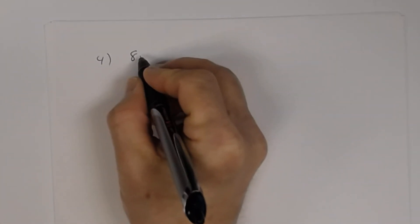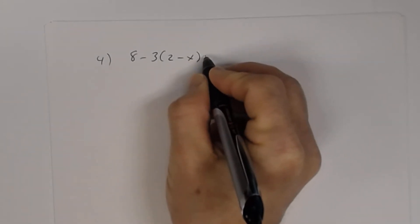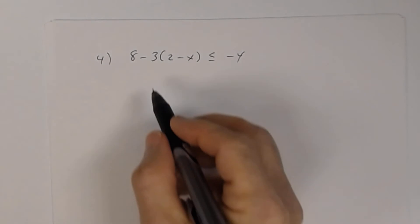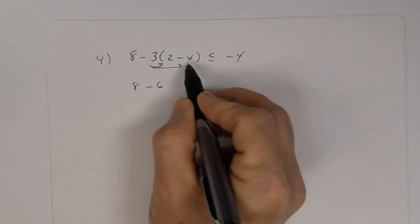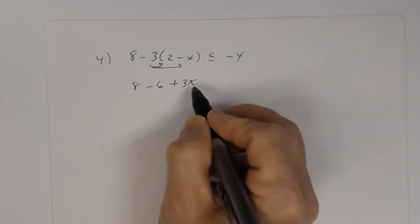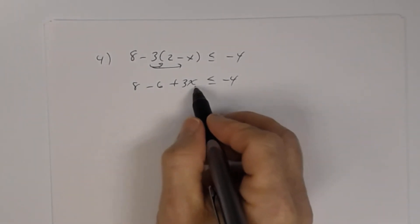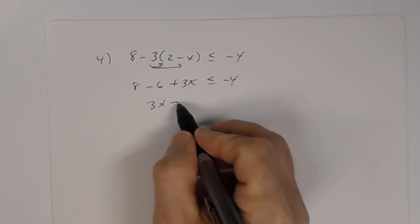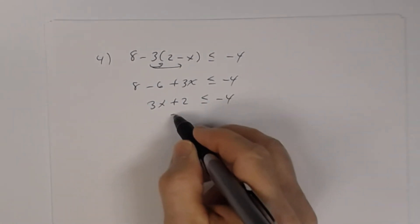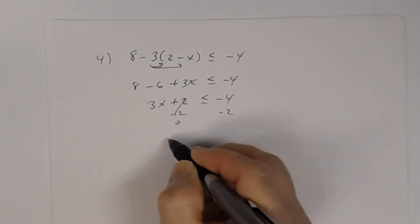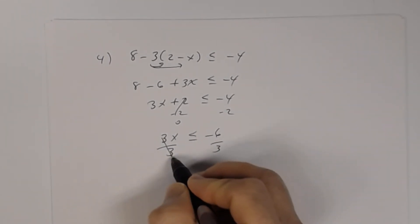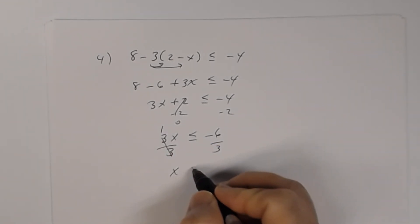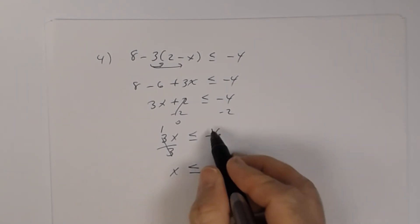Number four: we have 8 minus 3 times (2 minus x) is less than or equal to negative 4. Distribute: negative 3 times 2 is negative 6, and negative 3 times negative x is positive 3x. So we get 3x plus 8 minus 6 is less than or equal to negative 4. Combining like terms: 3x plus 2 is less than or equal to negative 4. Subtracting 2: 3x is less than or equal to negative 6. Dividing by 3: x is less than or equal to negative 2.